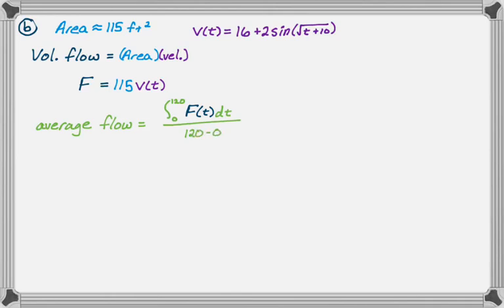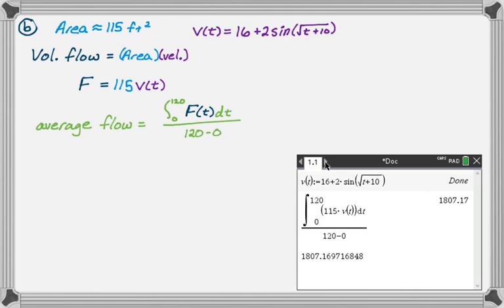This is definitely a calculator thing. So I just stored the function, typed it in, and I got that. I'm going to write my answer to three decimal places: 1807.170. And that's our answer. They tell you in the problem that the units of this are cubic feet per minute, so I'm going to label it. And that's part B.